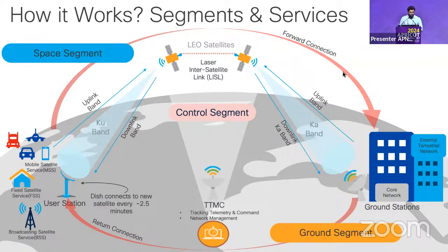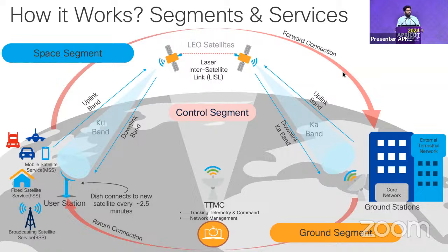These three segments manage the entire infrastructure. The control segment handles telemetry and network management. The space segment handles inter-satellite laser links. The control segment also manages de-orbiting when a satellite's service life is over, since these satellites have limited lifespan and must be replaced.